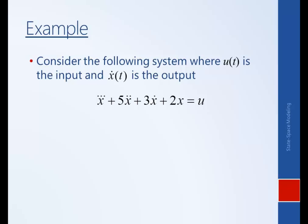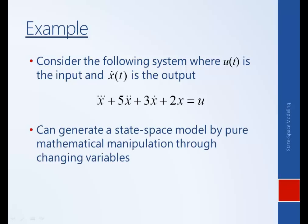By definition, this is not in state-space form. In order to be in state-space form, we need to model the system as a series of first-order differential equations. Here the highest derivative is third-order. Therefore, one way to put a differential equation model into state-space form is to simply do a change of variables. By choosing this new set of variables, we can rearrange this as three first-order differential equations — a variable for the zeroth derivative, the first, and the second. The highest derivative does not need its own state variable.